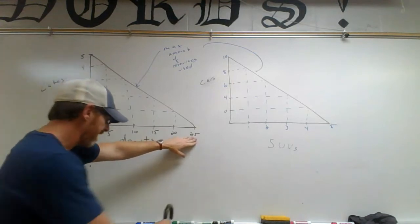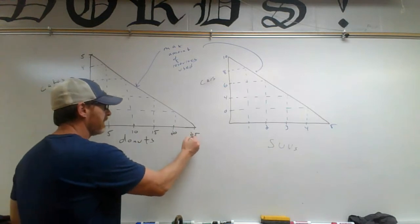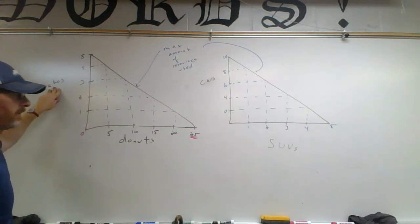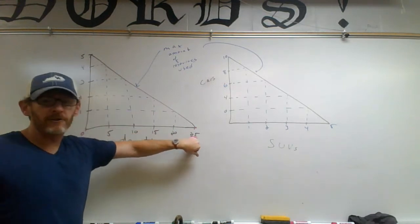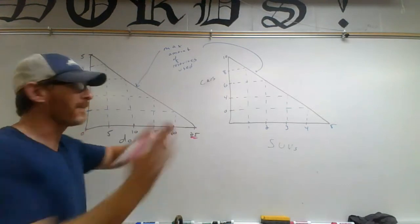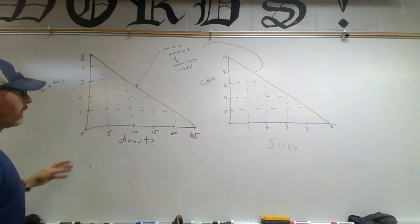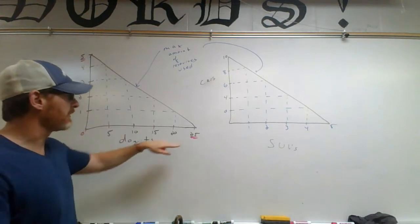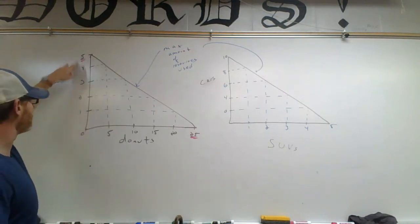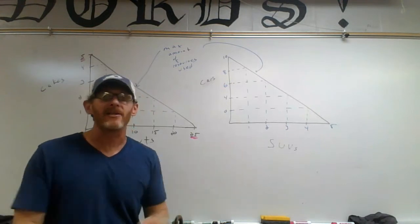Using all of our resources, we can make 25 donuts. If we make 25 donuts, that means we don't have any more resources to make cakes. But if we take all of our resources to make cakes, we can make five cakes. So we can put all resources into donuts and make 25, or all into cakes and make five with zero donuts.